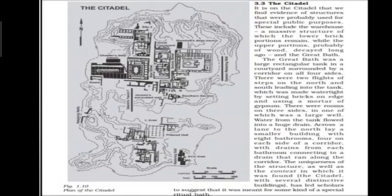On the citadel, evidence of structures probably used for special public purposes was found. These include a warehouse — a massive structure of which the lower brick portion remains today, as the wooden portion decayed over time.